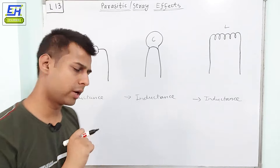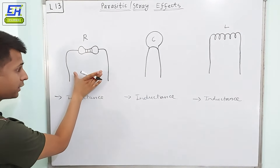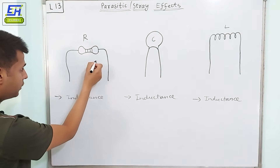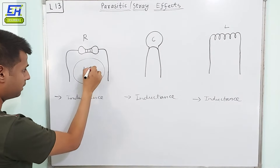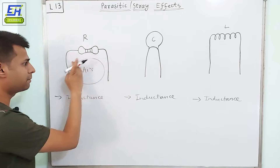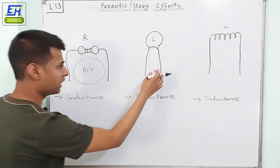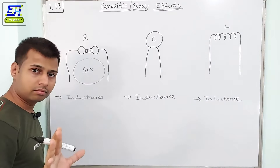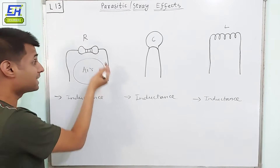Now let's see the second scenario. See these two terminals — these two leads — they are actually separated, and you have the medium which is air in between these two conductors. So by definition, if two conductors are separated by any medium — it can be air, it can be water, it can be paper — they will actually form a capacitor. It will resemble a capacitor.